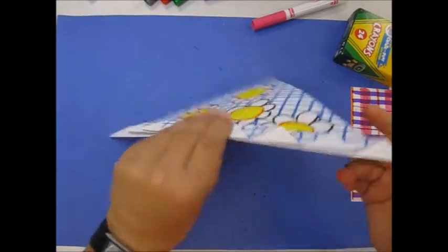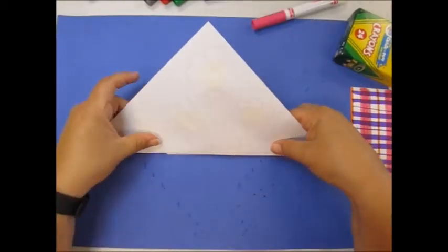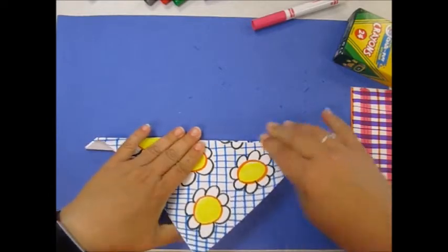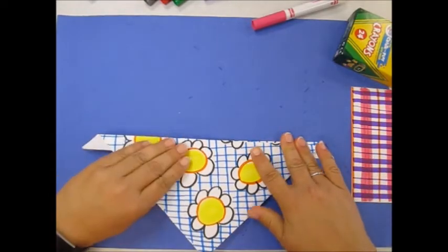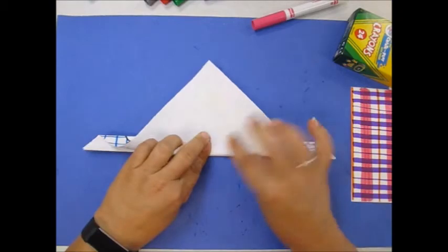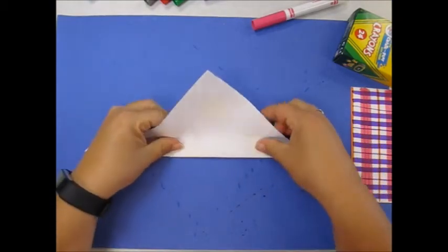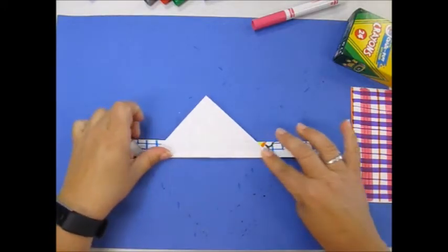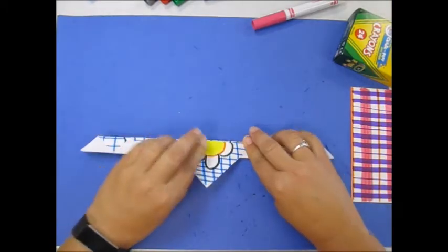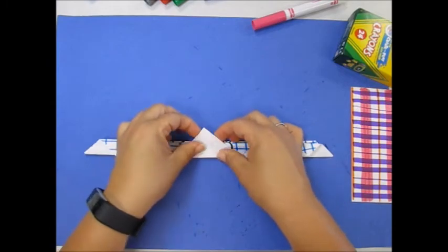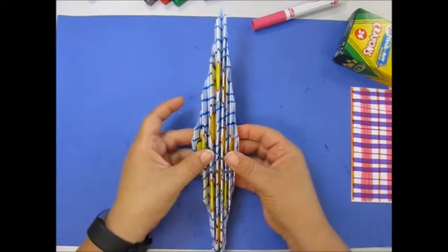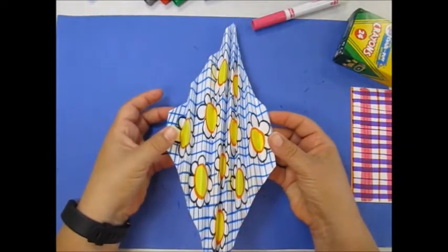Now I flip this over and I do the same thing. Find the fold underneath and crease it. And then go up, smooth, down, smooth, up, down, up, down, until you run out of paper. So when you open it up, it looks like this.